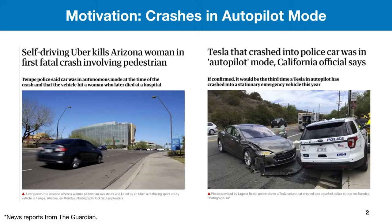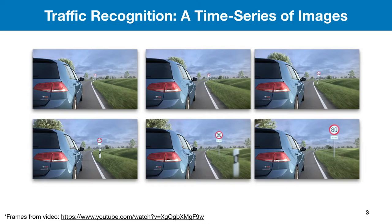We demonstrate the motivation of our work by listing two crashes that happened in Uber and Tesla self-driving cars when the autopilot mode was on. Ideally, if deep neural networks are employed in self-driving cars to carry out traffic recognition tasks, they should be able to correctly recognize a road sign — for instance, 80 miles per hour — when the car is driving forward and the road sign is approaching.